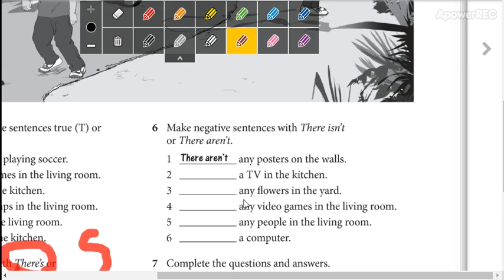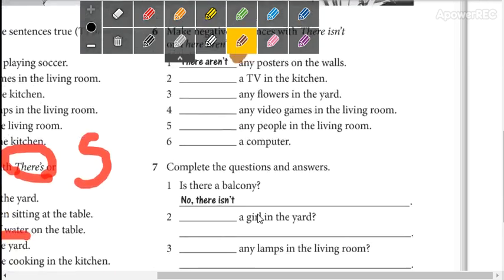Recuerden que cada vez que dice any, sí o sí tienen que poner there aren't, si es que no es pregunta. Para el a, no se sabe si puede ser afirmativo o negativo, pero aquí nos están diciendo todo es con there isn't or there aren't, entonces sí o sí hay que poner there isn't porque es singular.